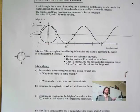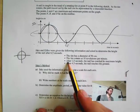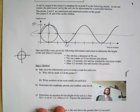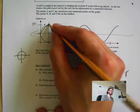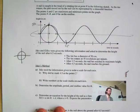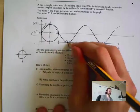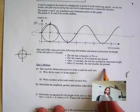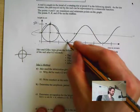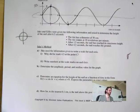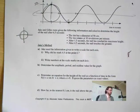So 10 revolutions per minute. That means there's 10 periods in a minute. After 1.5 seconds, the nail reaches its maximum height. A is the maximum height, that's after 1.5 seconds. After 4.5 seconds, the nail touches the ground, it's here. So now let's take a look at Jake's method.